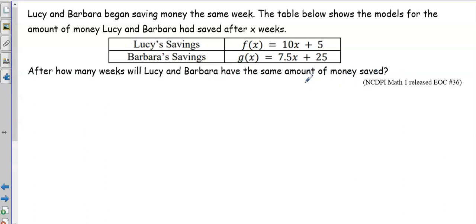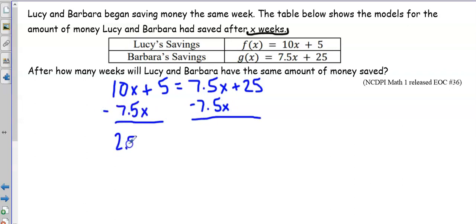So if we want to know when their amount of money is the same, we want to set F of X, which is Lucy's savings, equal to G of X, which is Barbara's savings. And then we'll solve for X, which represents the number of weeks. That is going to start by subtracting 7.5X on both sides of the equation. That gives me 2.5X plus 5 equals 25.